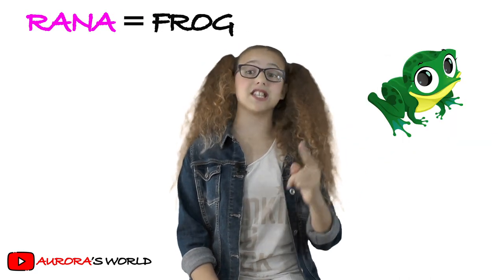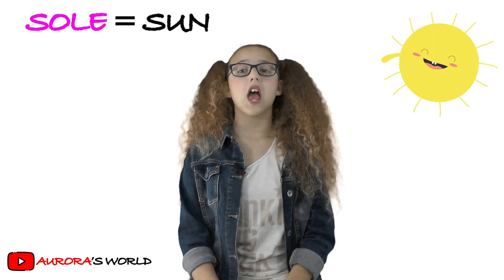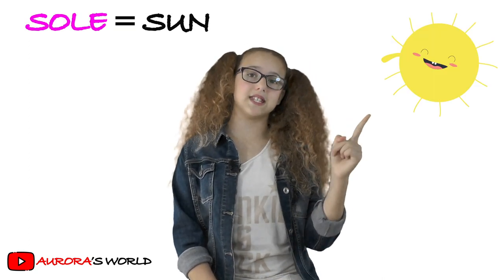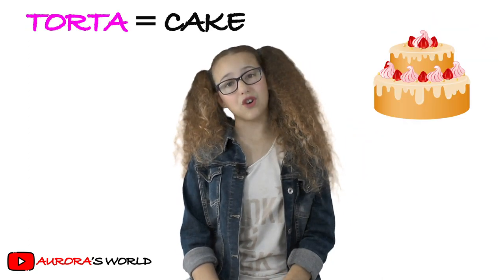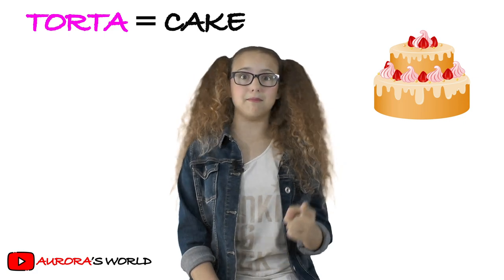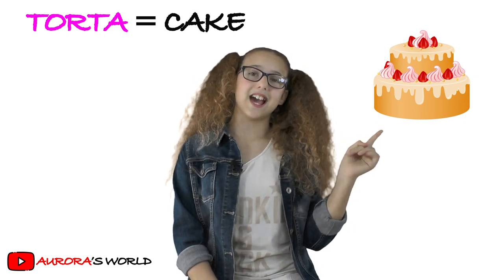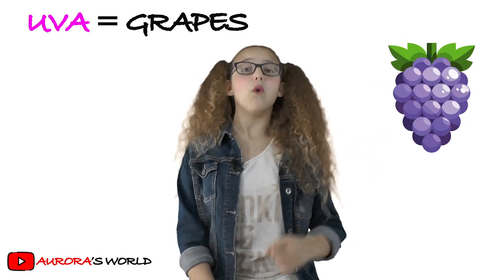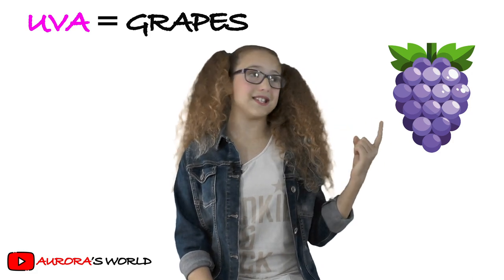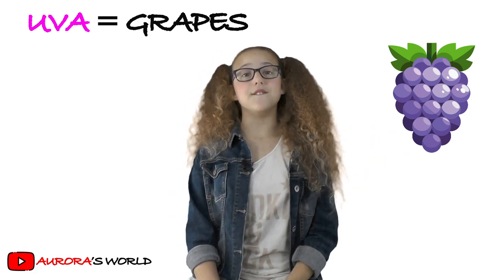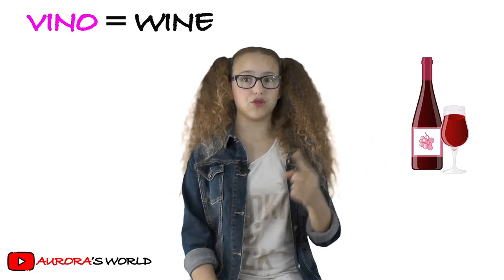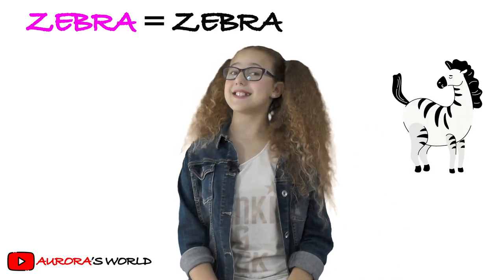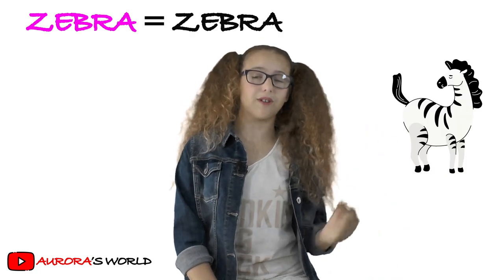Rana means frog, sole means sun, torta means cake, uva means grapes, vino means wine, and zebra means zebra.